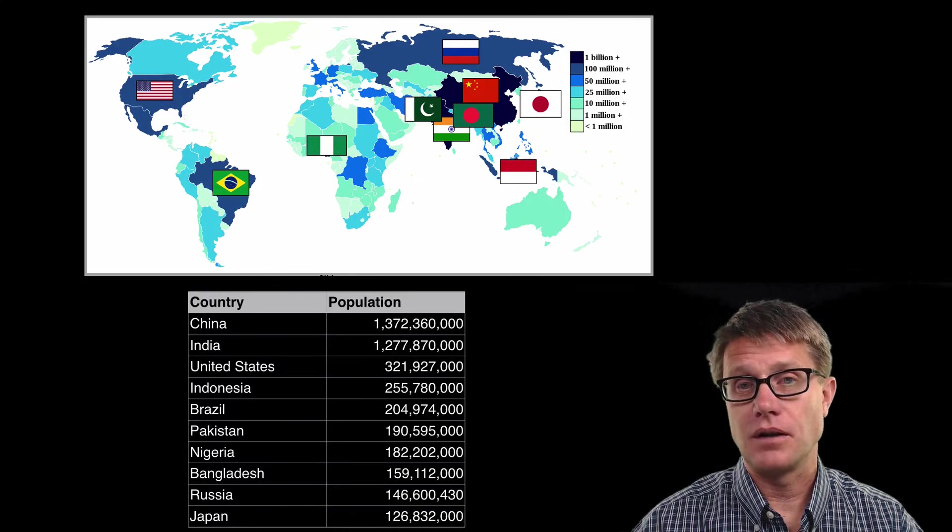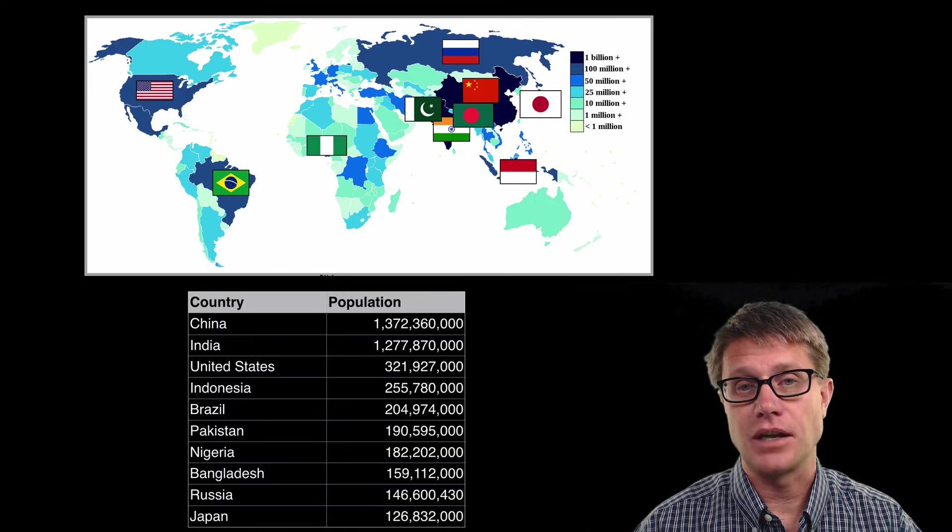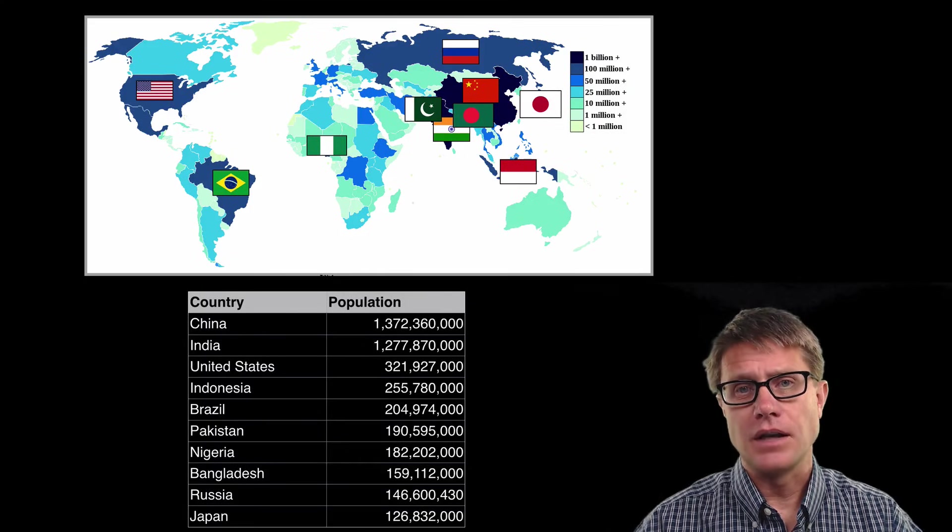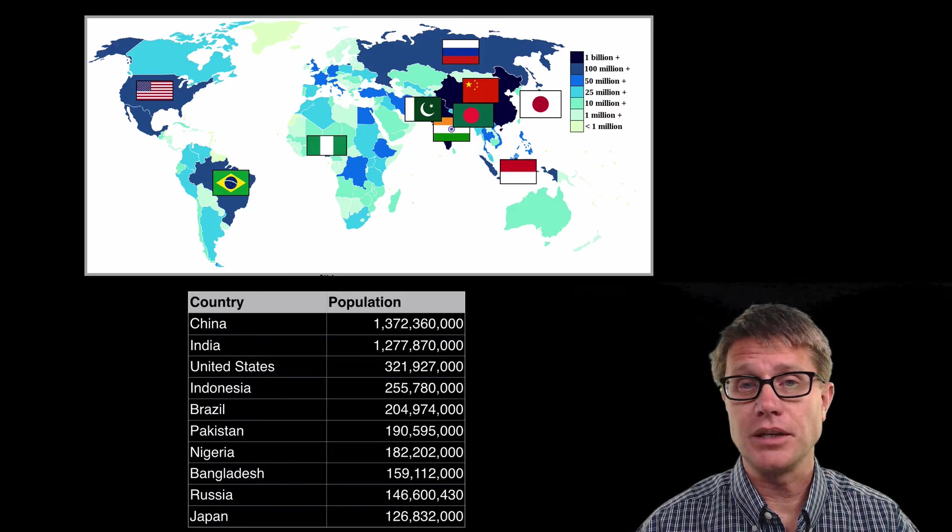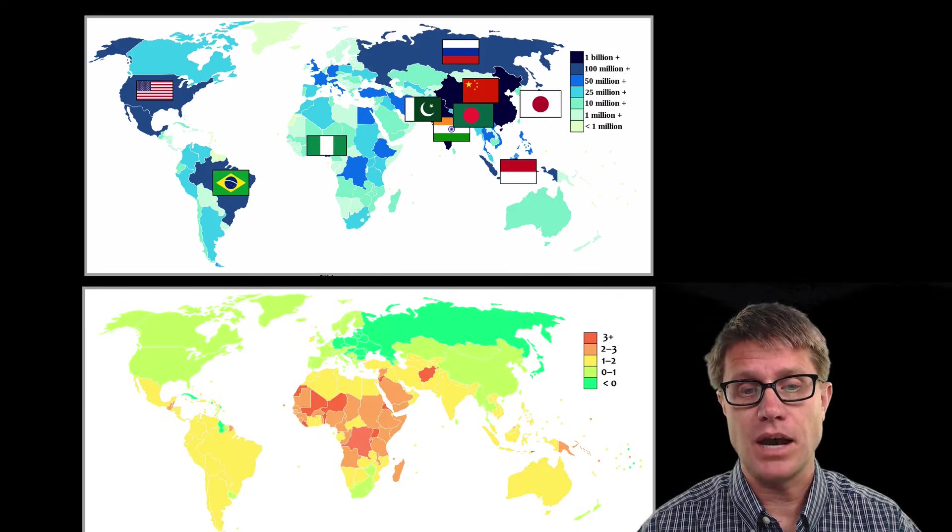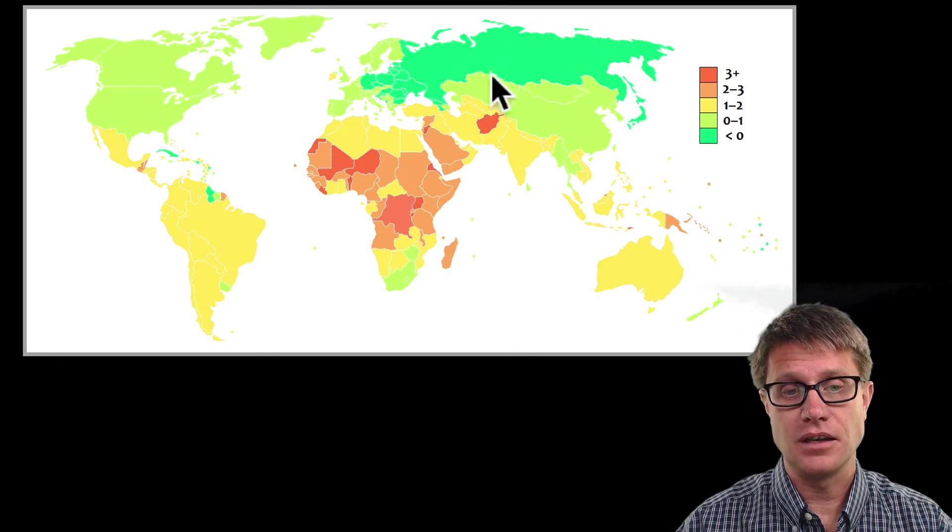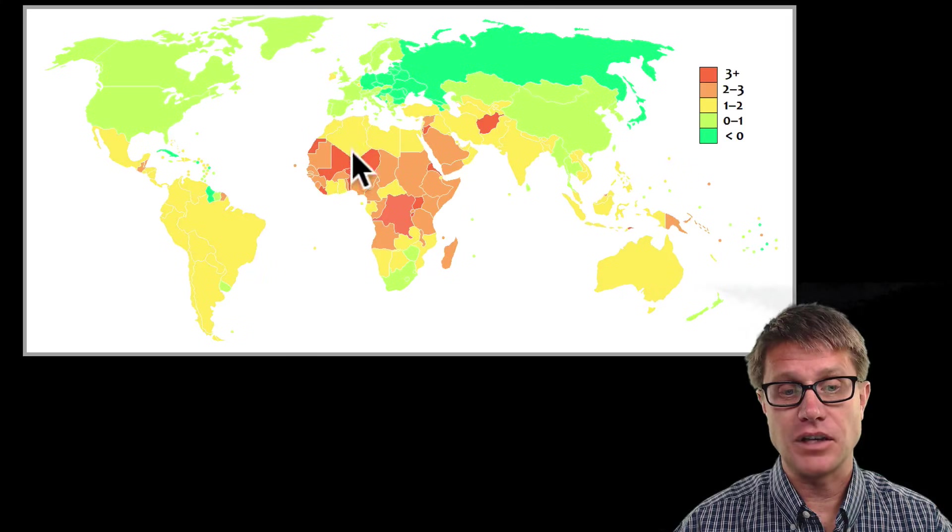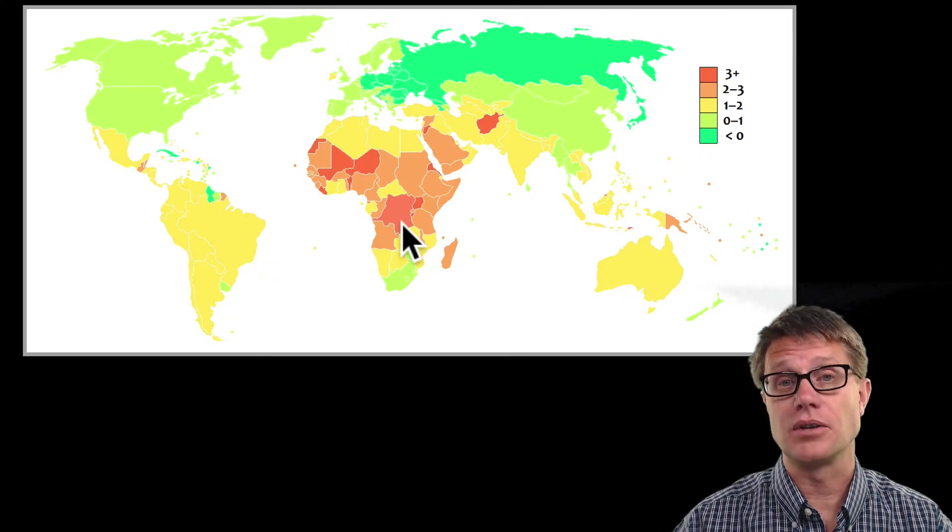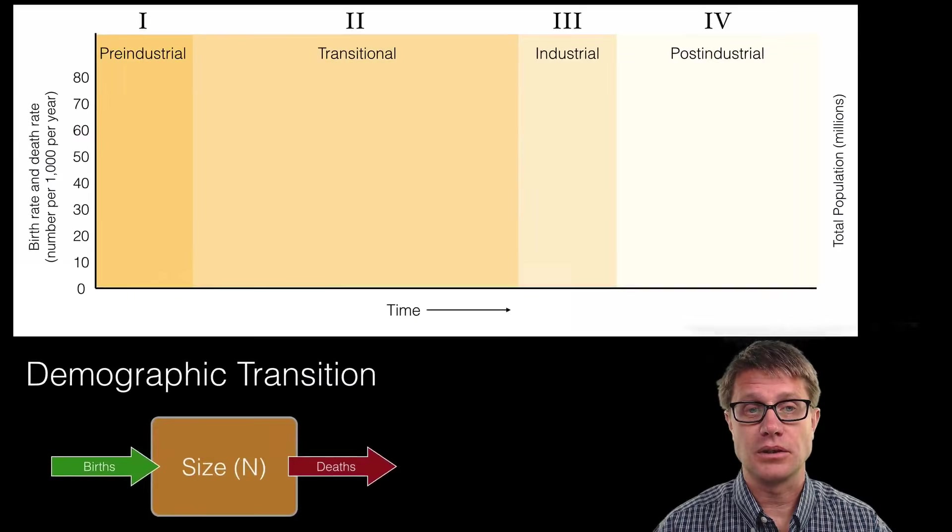And so if you look at the population of these countries, just those countries account for about 60 percent of the population on our planet. Now is that going to be the same percent into the future? Probably not. Because if we look at that same map and look at the growth rate, you can see that in some areas like the US it is increasing. In a lot of these areas the population is actually decreasing. In a lot of sub-Saharan Africa it is really increasing into the future. And so that top 10 is definitely going to change as we look into the future.